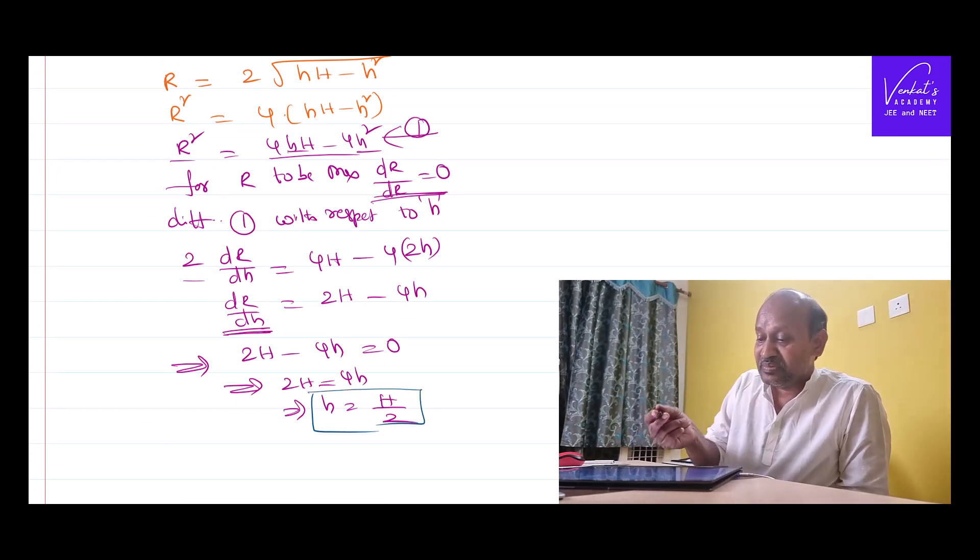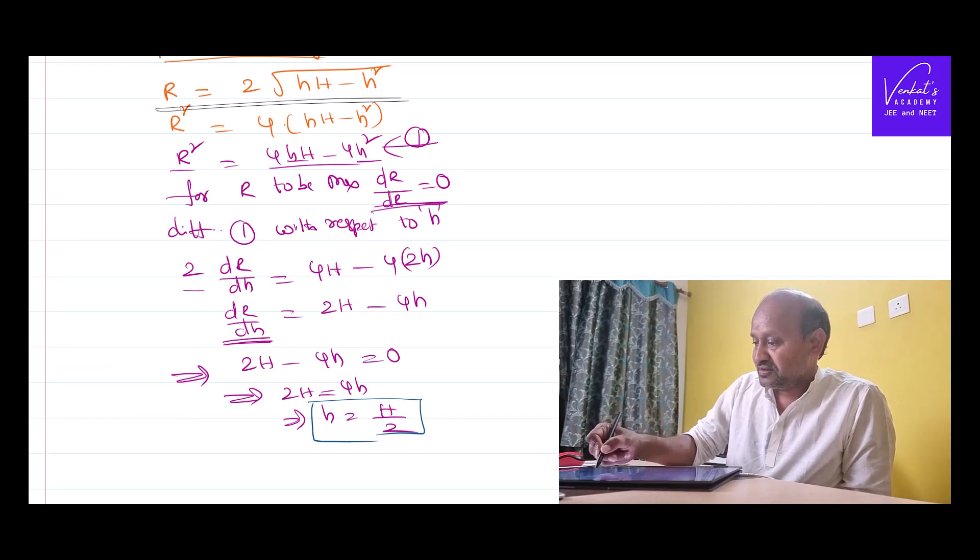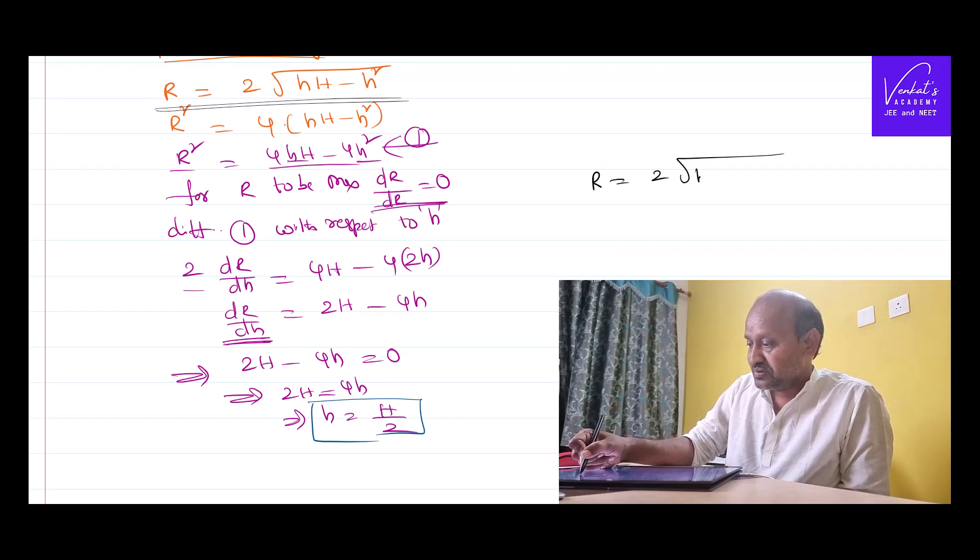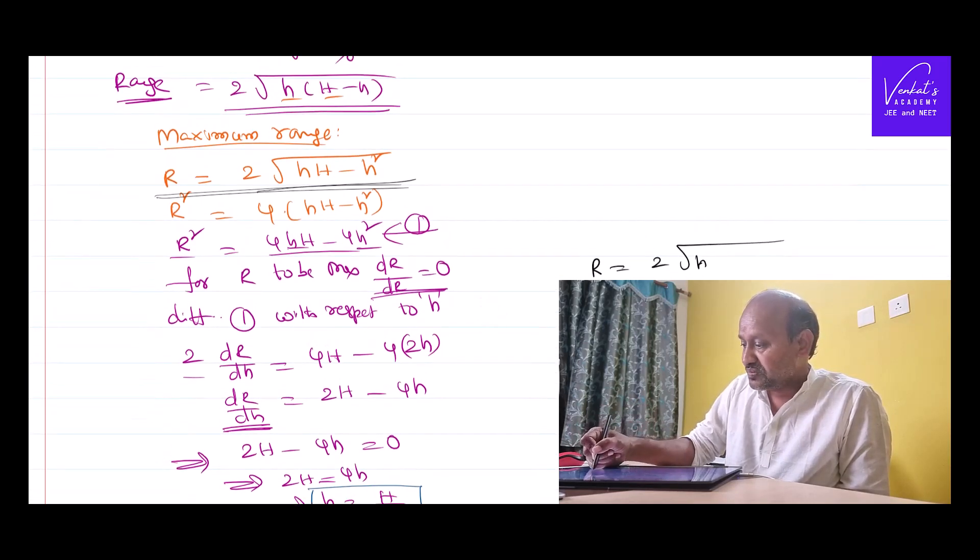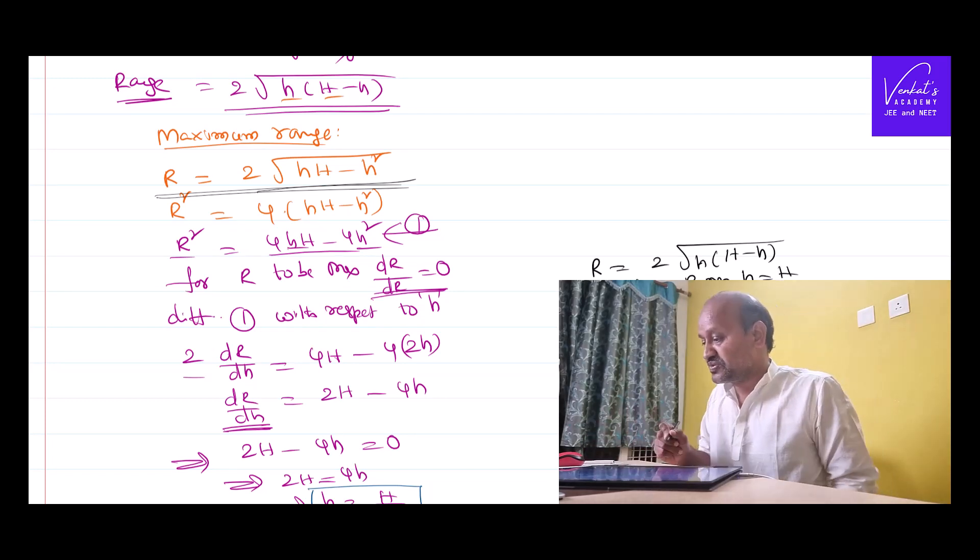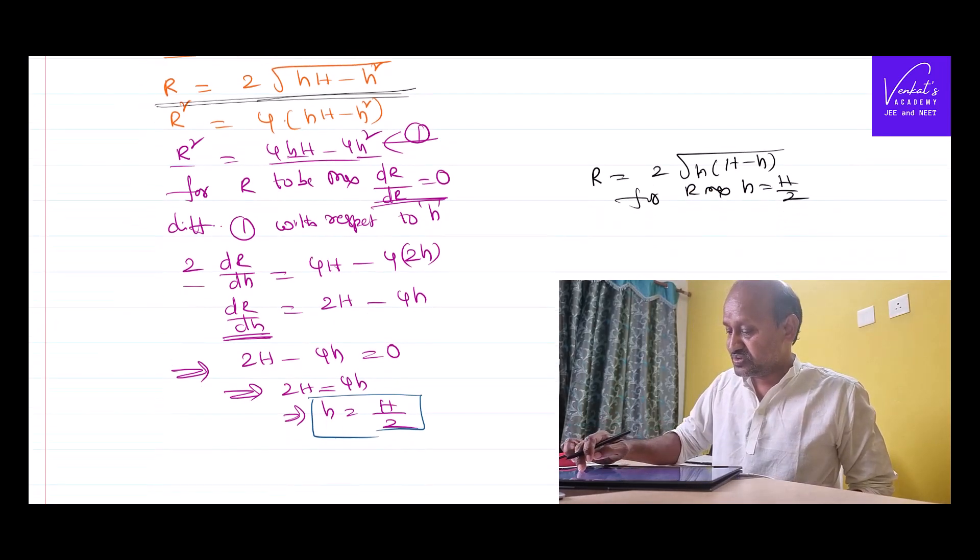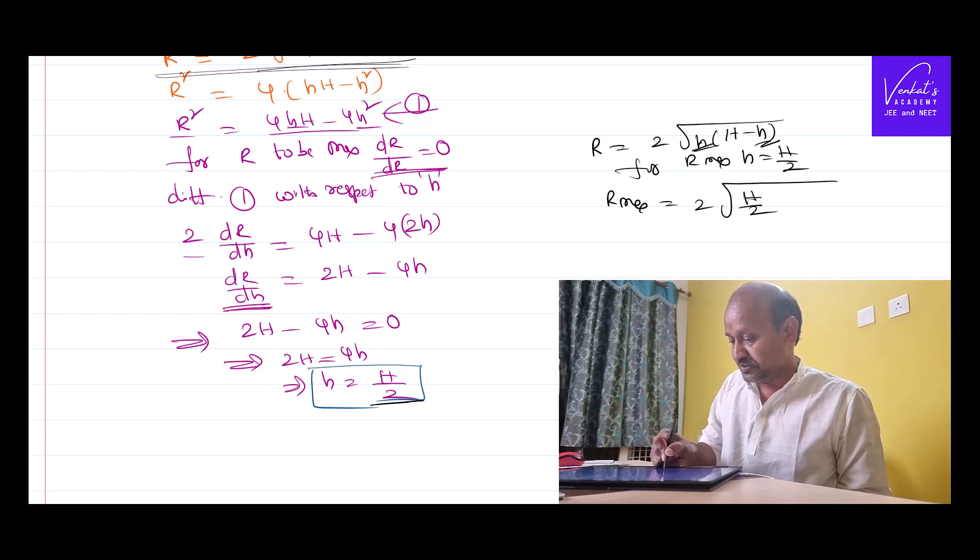And how much is that maximum range? If you are willing to calculate that value, you know the equation. Range R equals 2 times small h into capital H minus small h. For range maximum, substitute small h equal to capital H by 2. Range maximum equals 2 times H by 2 times H minus H by 2.